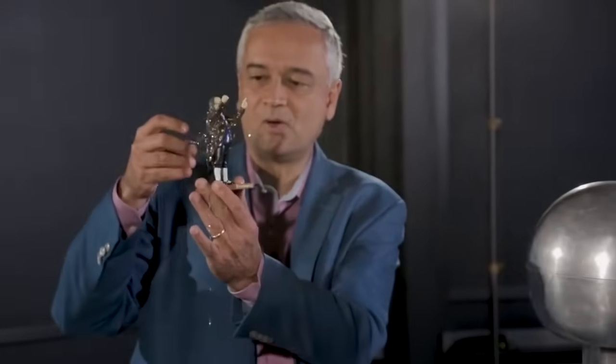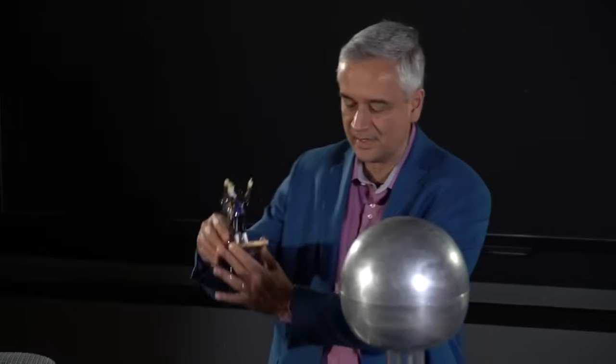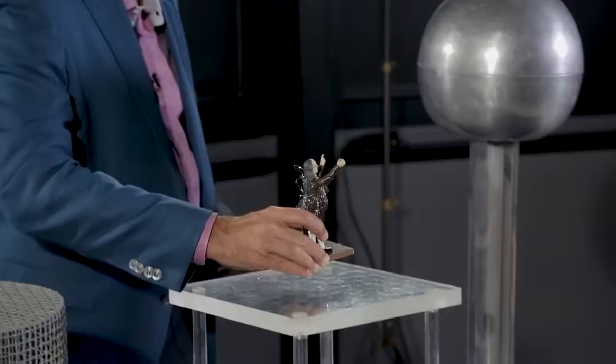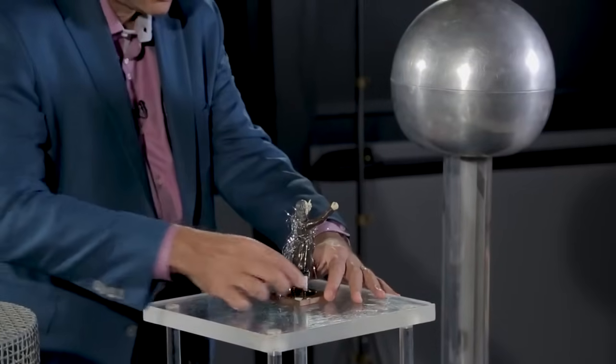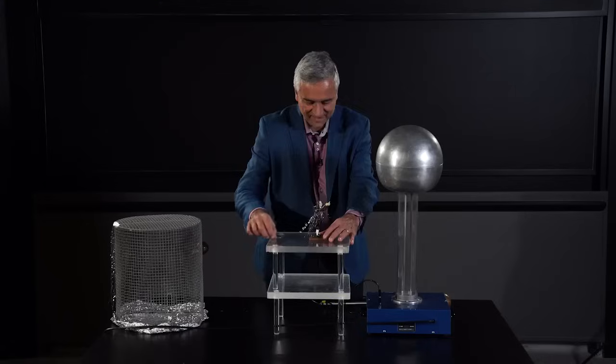Here we have Benjamin Franklin wearing a nice little Hawaiian hula skirt made of tinsel, and he is about to be in a thunderstorm. We are going to make our thunderstorm with our Van de Graaff generator.